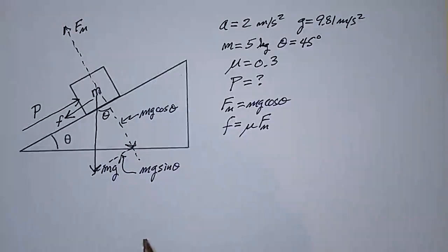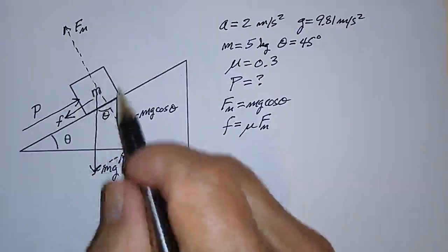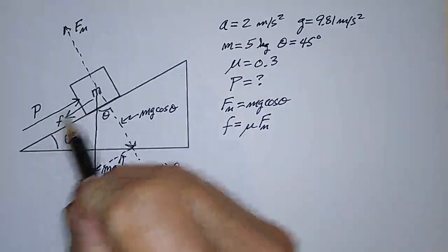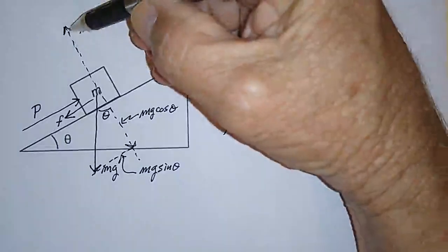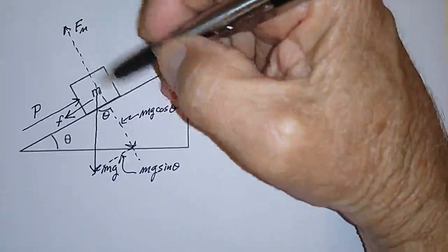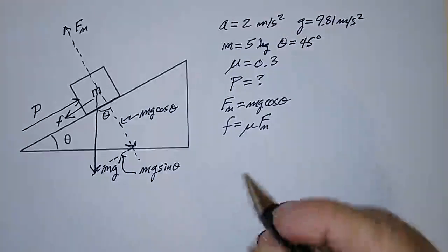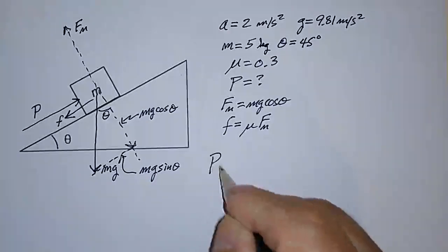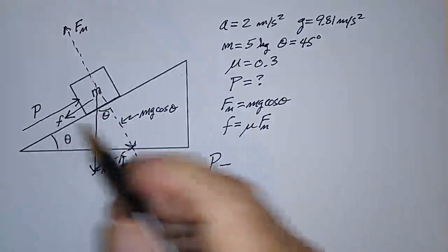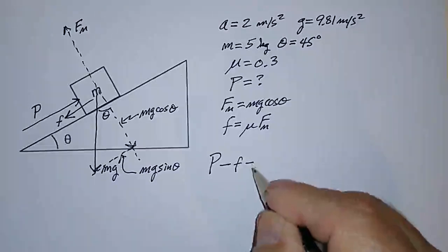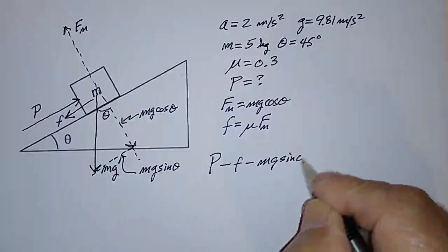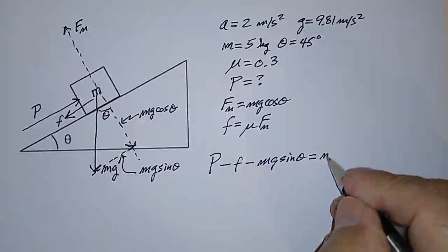So if we want to write an equation that represents Newton's second law, we look at the net force acting on M. And we're particularly interested in the net force parallel to the plane. We know that these two forces are balanced because nothing's happening in this direction. So the force causing it to accelerate up the plane, P, minus the two downward forces, which are F and MG sine theta, have to be equal to MA.